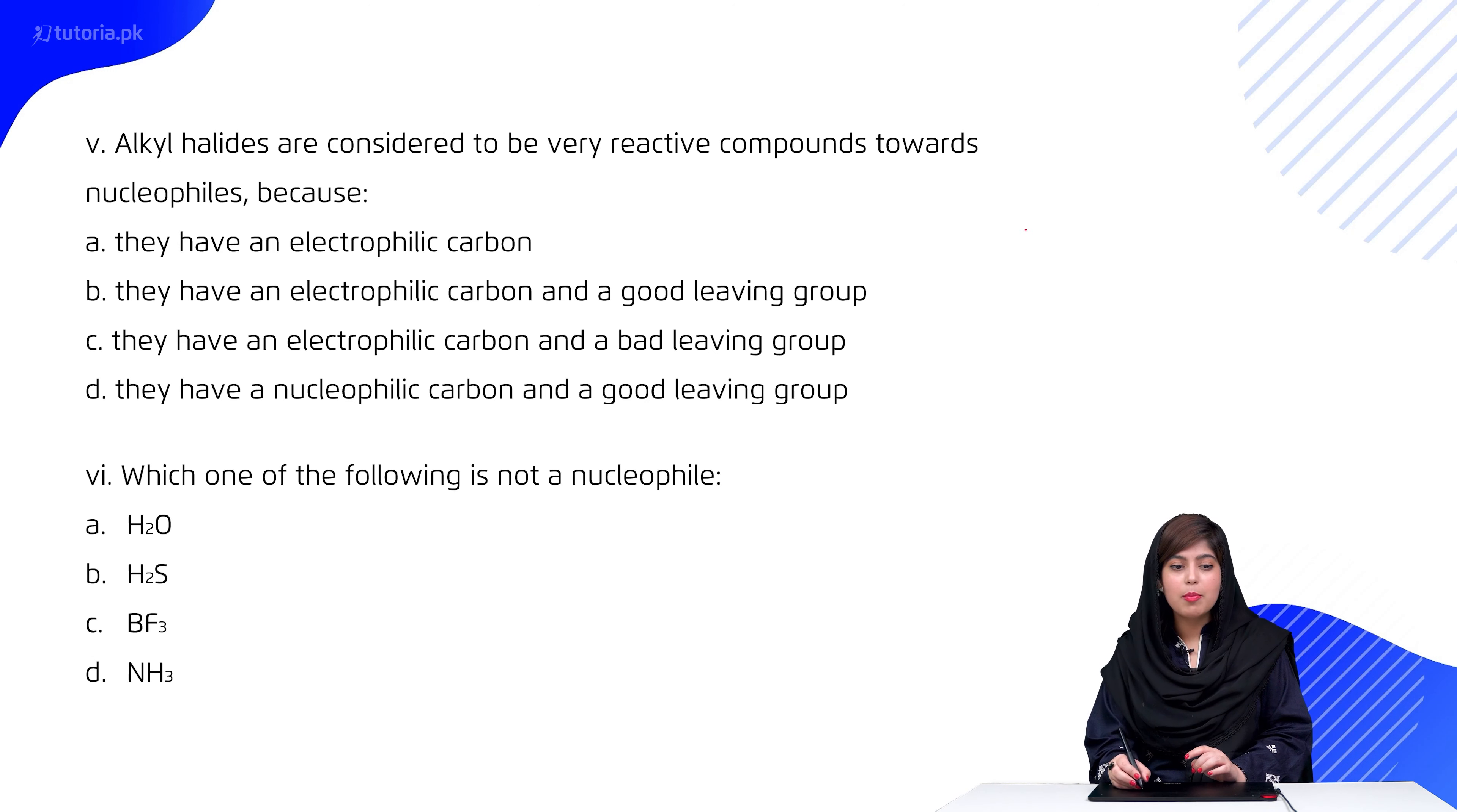So students, in alkyl halides, the carbon and halogen bond is present. Carbon is the electrophilic center because there is partial positive charge on carbon and partial negative charge on halogen. Students, due to electrophilicity, we say they have an electrophilic carbon and a good leaving group.